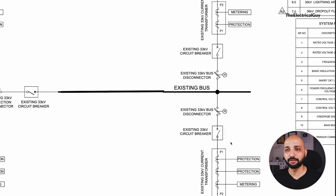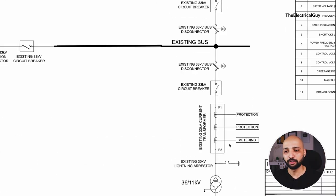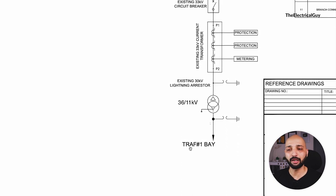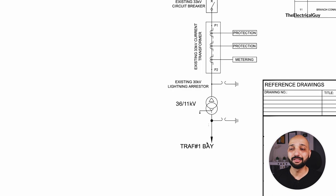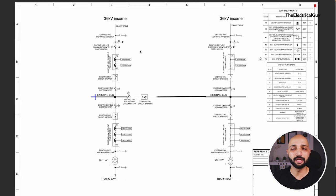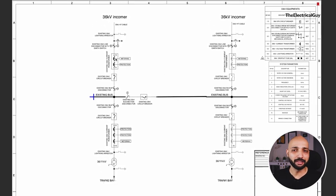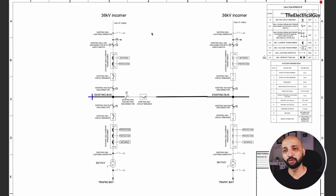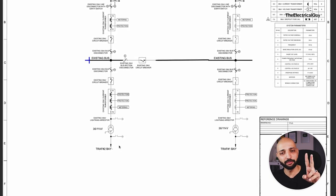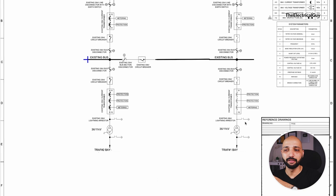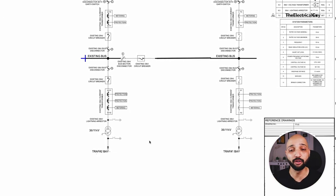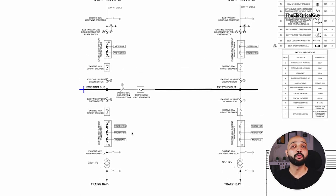Everything we have seen from top to bottom is called one bay. You can see the labeling here — this is Transformer Bay 1, where 'TRAF' is the short form for transformer. The exact mirror image of this arrangement can be seen on the left hand side with the exact same equipment and arrangement — that is Transformer Bay 2. So basically there are two transformers: the left side is Transformer Bay 1 and the right side is Transformer Bay 2. This is the 36 kV by 11 kV SLD.